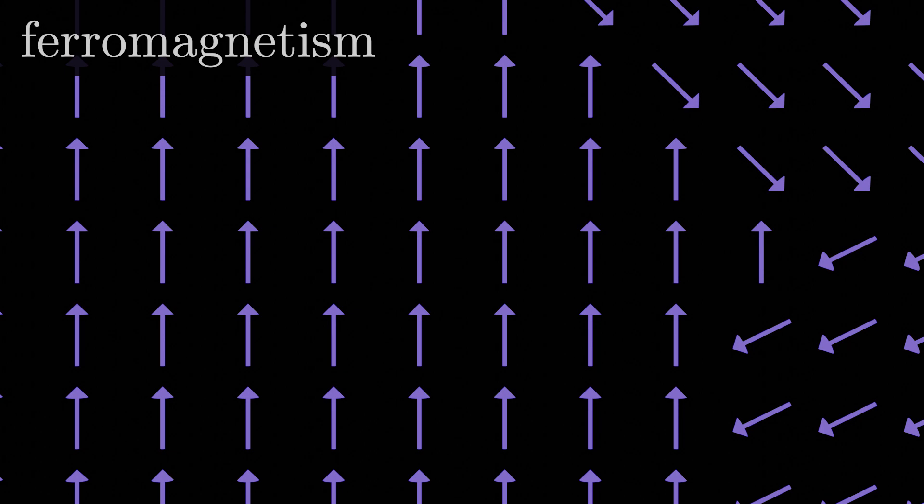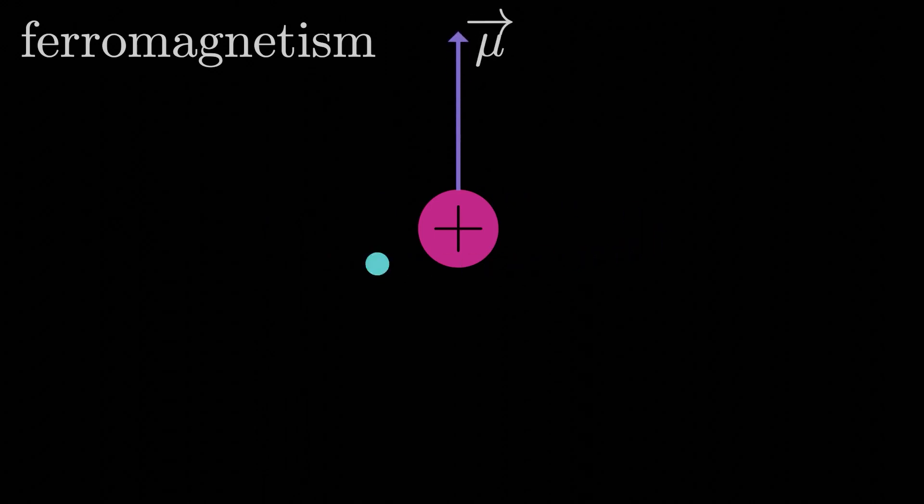Now always remember, when we're talking about these magnetic dipole moments, we're really just referring to atoms here. Each atom has its own set of electrons buzzing around, creating many current loops, so the atom itself is a magnetic dipole.